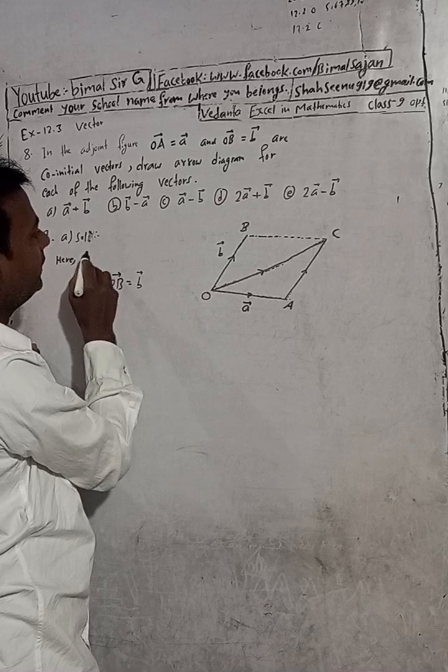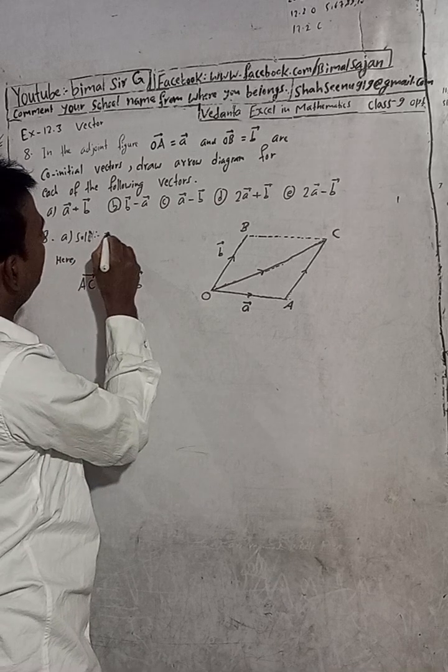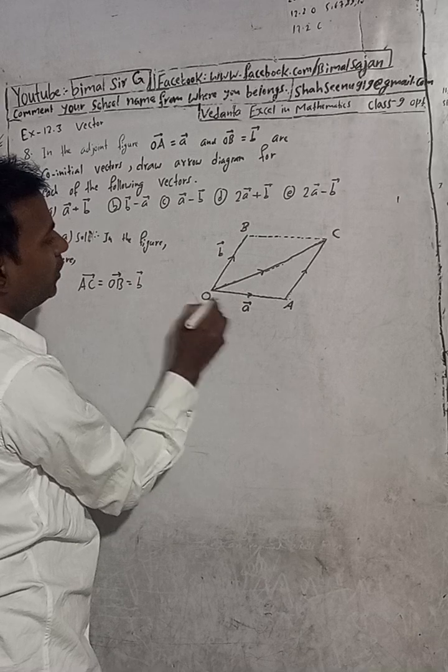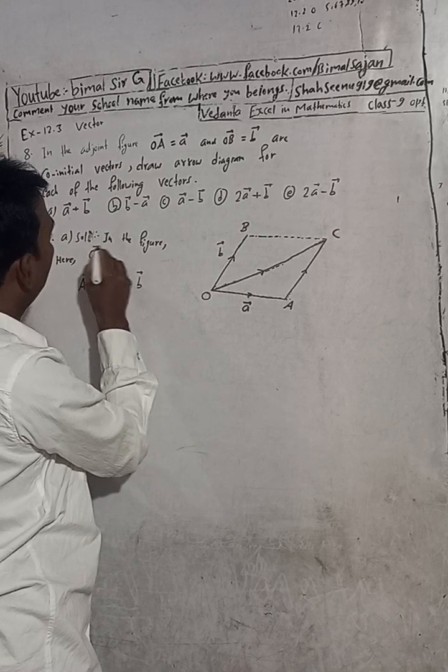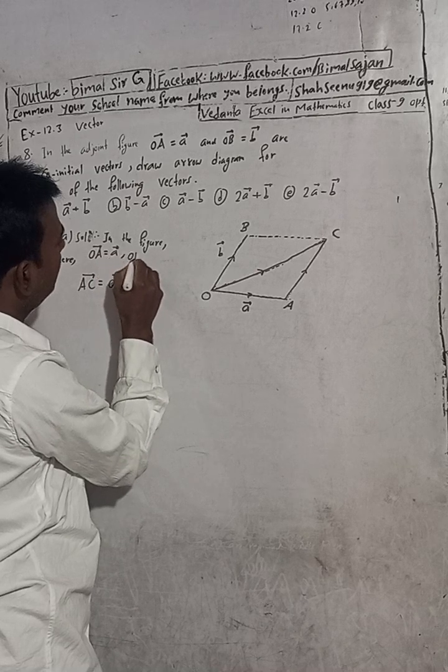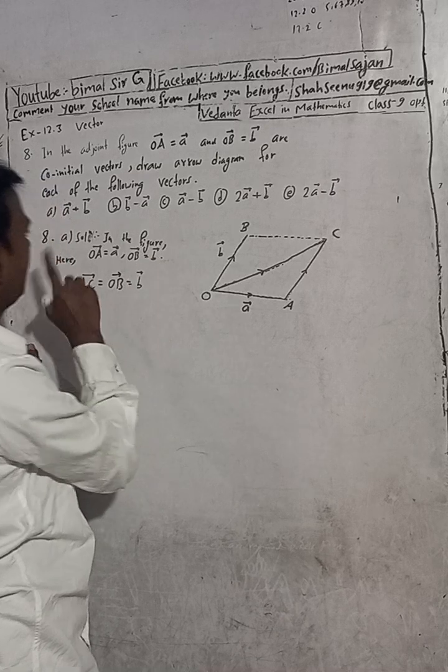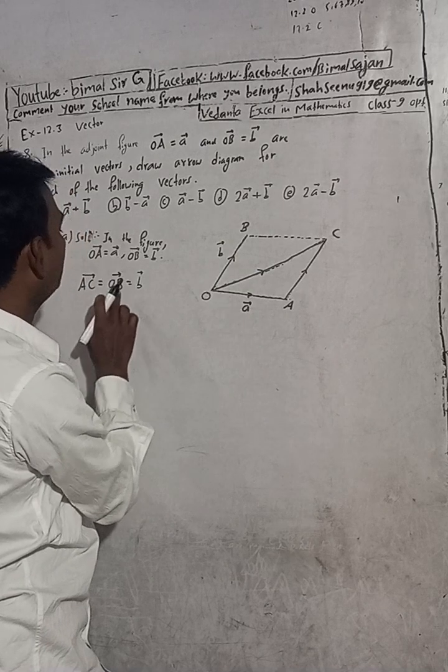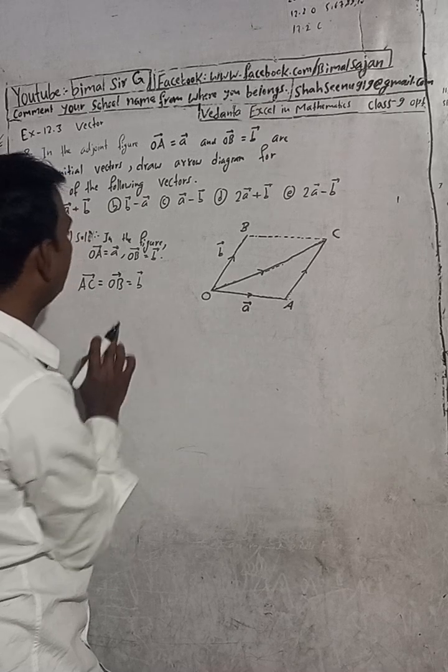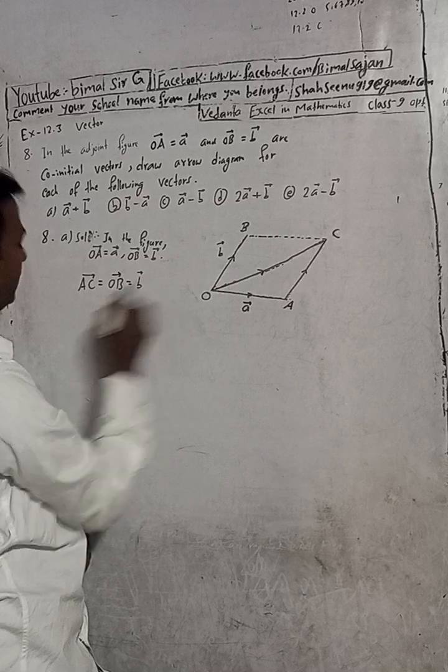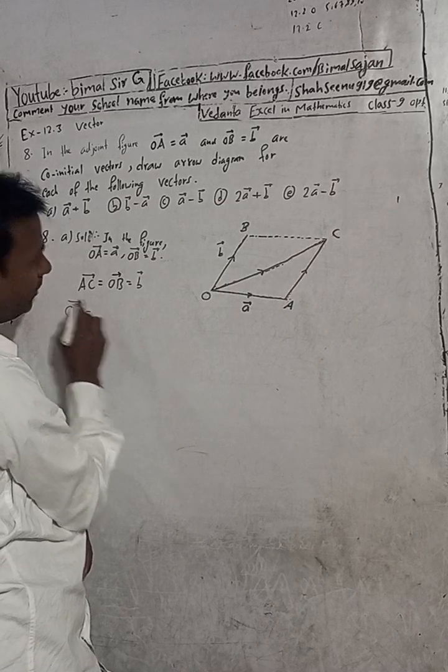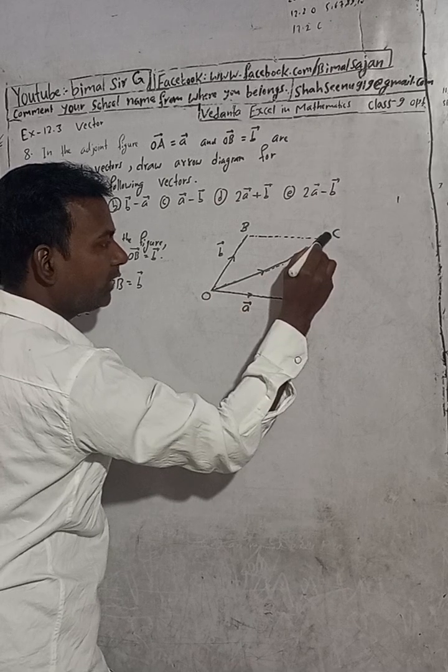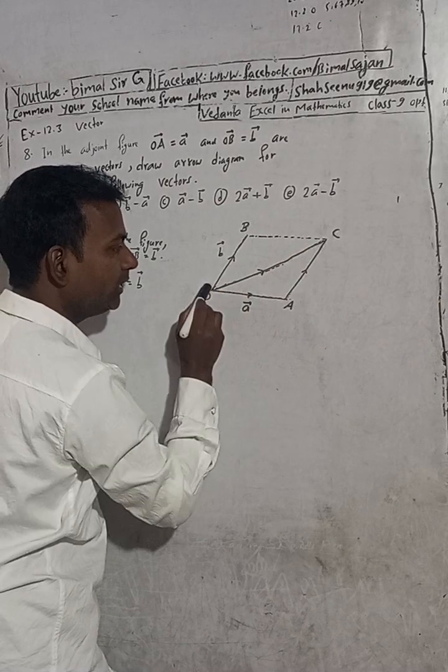In the figure, A vector is equal to OA vector, B vector is equal to OB vector, and AC vector is shown. This completes the parallelogram construction.